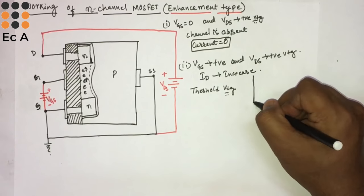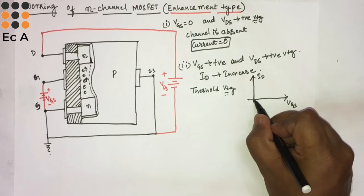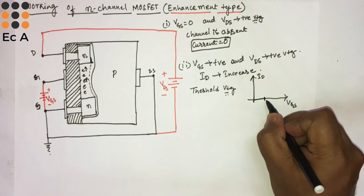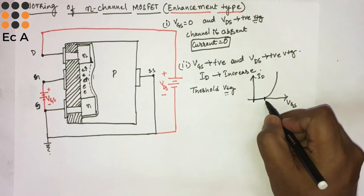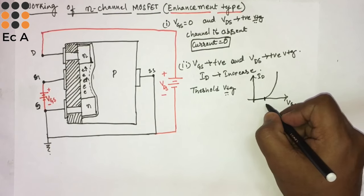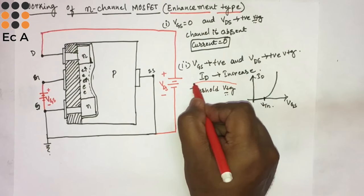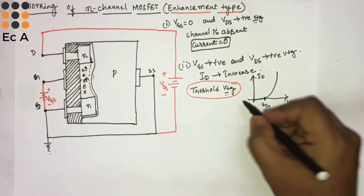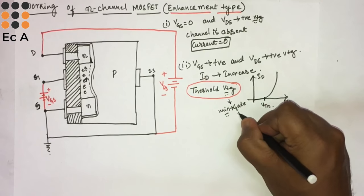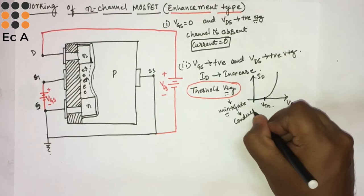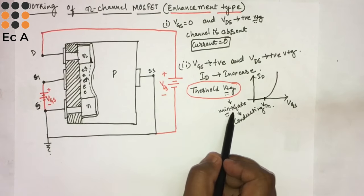If we plot VGS versus ID, the MOSFET will not conduct up to some voltage. Once sufficient electrons are accumulated towards the gate, the MOSFET starts conducting. The voltage from where the MOSFET starts conducting current is known as the threshold voltage — this is the minimum positive voltage that must be applied across the gate terminal so that the MOSFET starts conducting.